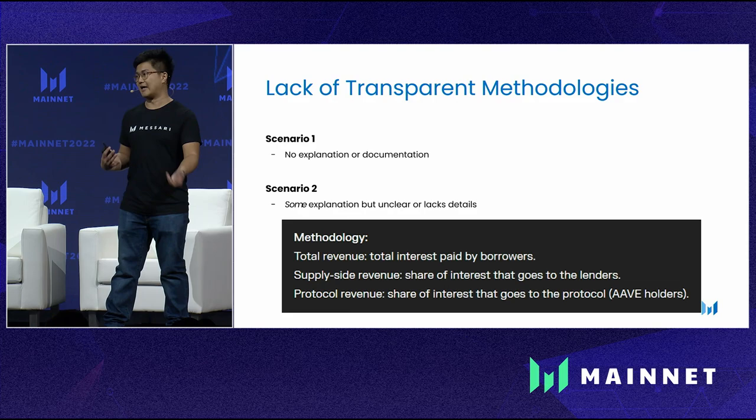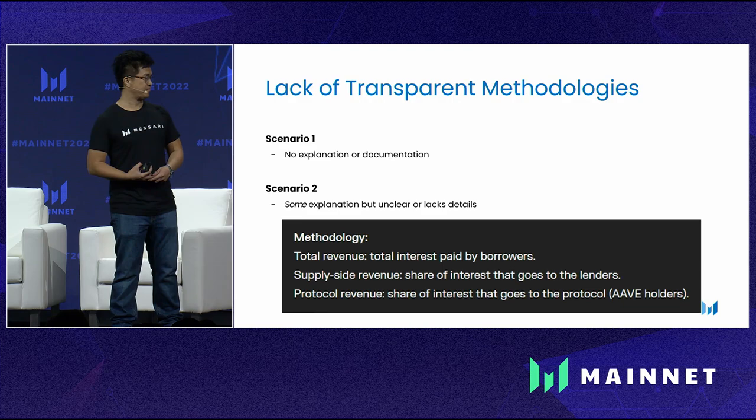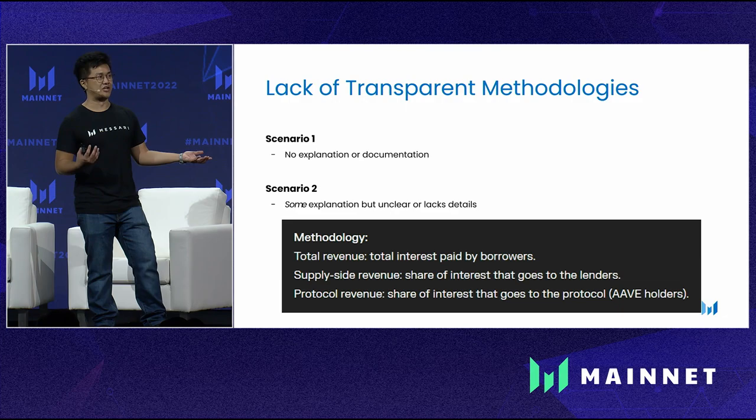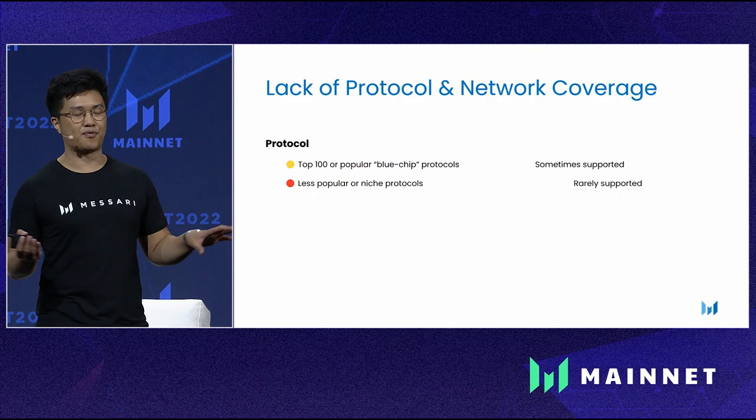The second scenario is that there is some explanation, but it's generally unclear, lacks details, and leaves follow-up questions. For example, one analytics tool describes total revenue for a lending protocol as 'total interest paid by borrowers.' That's fine, but the immediate question is: how do you calculate total interest paid by borrowers? And when they split revenue into the supply side and the protocol side, there's no indication of how that split is calculated or where it comes from.